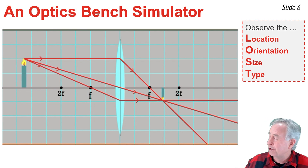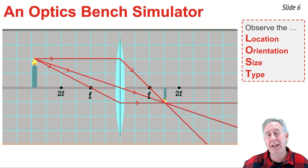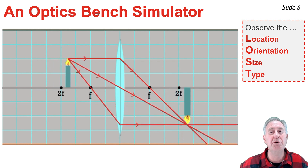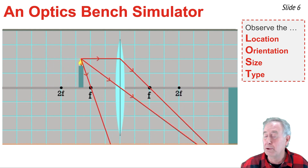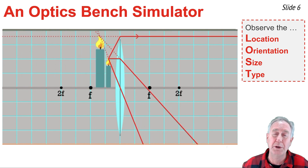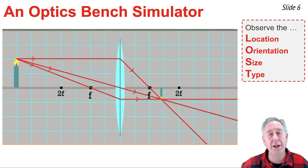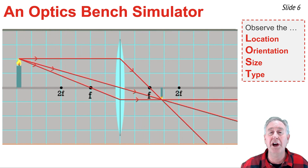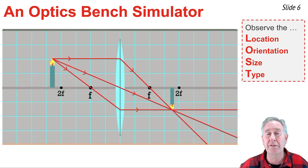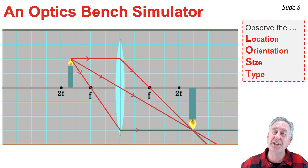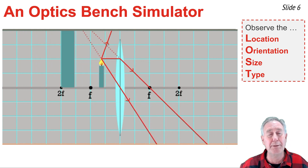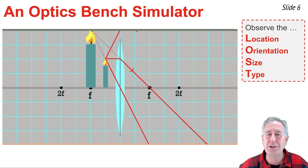An animation must be worth considerably more than a thousand words. Here in this animation, we see an object candle being moved along the principal axis from a location far away to a location near a converging lens. A ray diagram is drawn and the image is located. You can clearly observe how the location, orientation, size, and type of the image changes as the object location is changed.